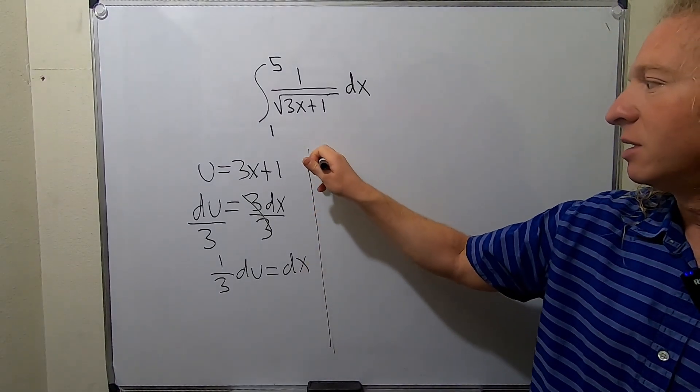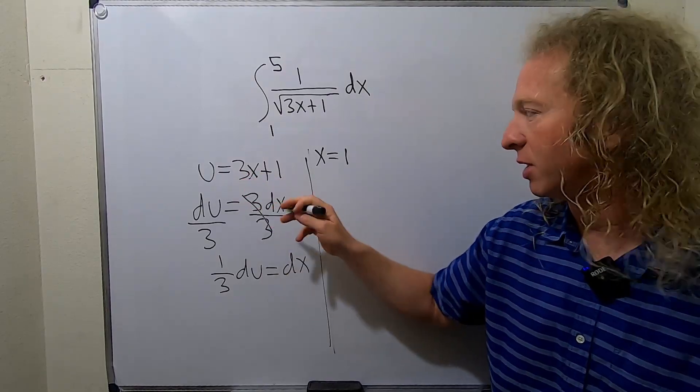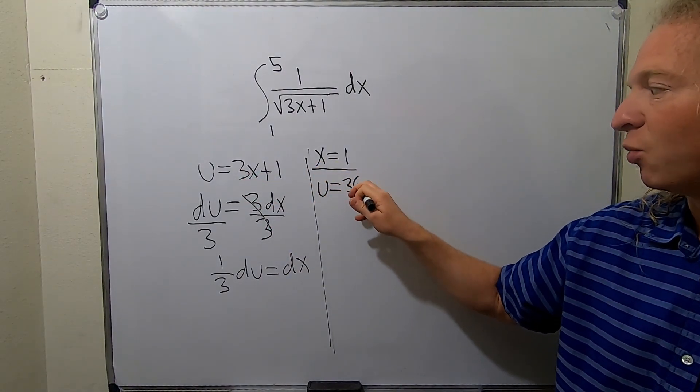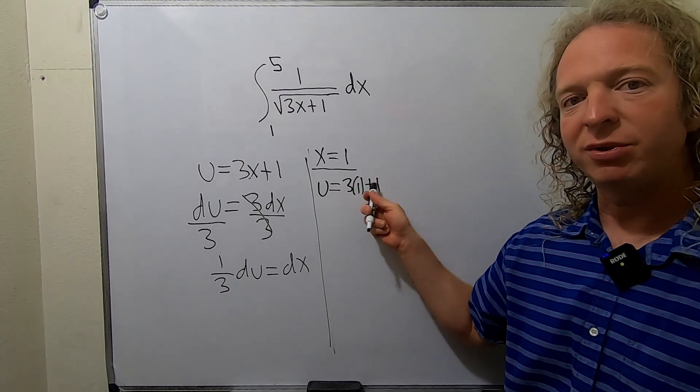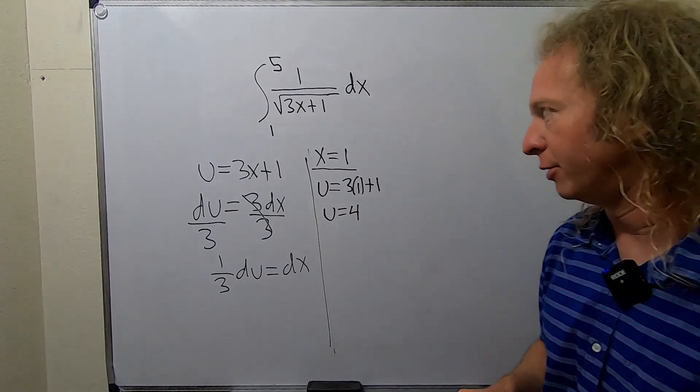When x is equal to 1, we're going to take the x and plug it in here and that will give us the u. So u equals 3 times 1 plus 1. 3 plus 1 is 4. So there is our u.